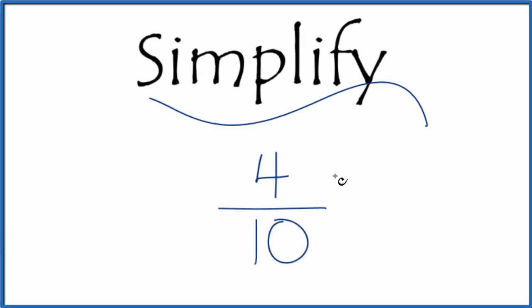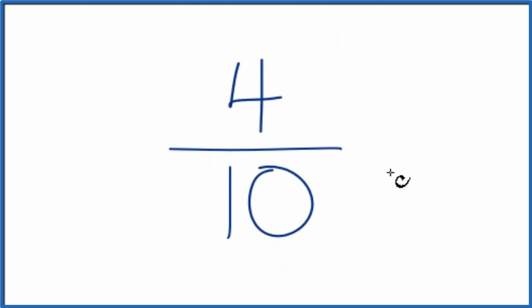If you need to simplify the fraction 4 tenths, here's how you do it. What we'll do is we want to find another fraction that's equal to 4 over 10. It's an equivalent fraction and has the same value, but we want that to be in lowest terms.